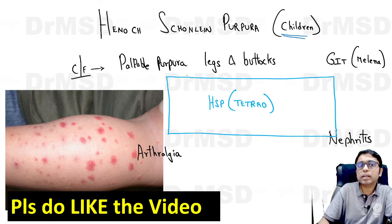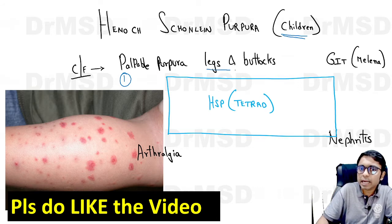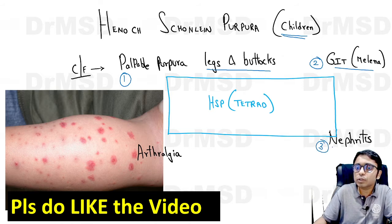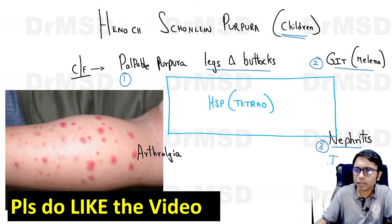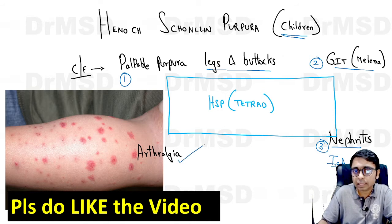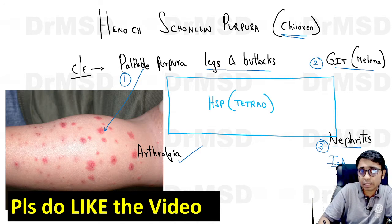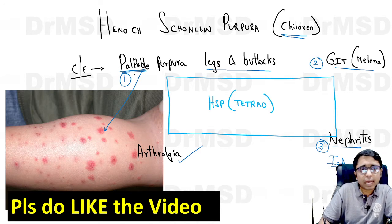The components of Henoch-Schönlein purpura form a tetrad of features. First is palpable purpura over the legs and buttocks. Second is involvement of the gastrointestinal tract with hemorrhages leading to melena or blood in the stools. Third is renal involvement in the form of IgA glomerulonephritis. Fourth is joint involvement — arthralgia. You can see erythematous purpuric lesions which are palpable purpura — you can touch and feel them as raised lesions.